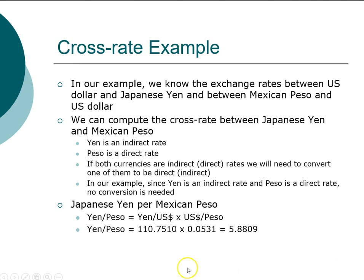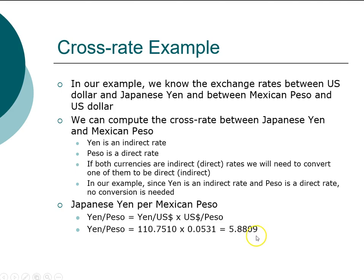All we have to do is take the yen exchange rate of 110.751 yen per US dollar, multiplied by the peso rate of 1 dollar per 0.0531 peso, and we get a yen-to-peso cross rate of 5.8809. This means it takes 5.8809 yen to purchase one peso — that is the direct exchange rate between yen and peso.